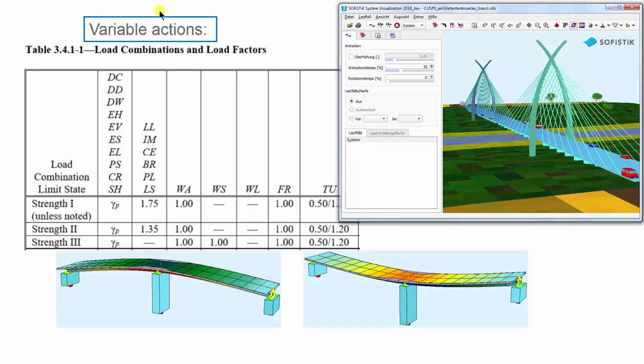Now let's have a look to the variable actions. This is mainly live load, braking, water and settlement effects, wind effects, and temperature. They all act on the final section.